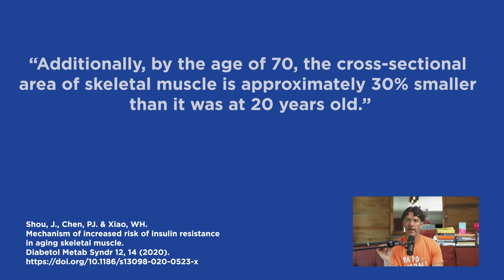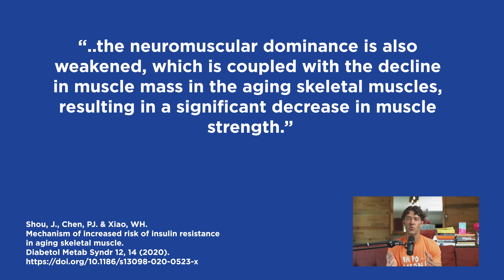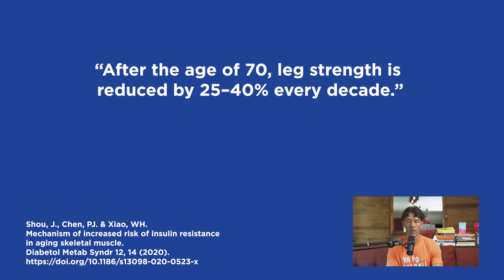When you lose the type two fibers, you lose strength. Strength actually declines at a much faster degree compared to the quantity of the muscle. The strength loss is about 25 to 40% per decade after the age of 40, compared to the roughly 10% loss of muscle size per decade after the age of 40. This is why it's so important to train for strength and to focus on high-intensity interval training as opposed to always doing long, slow, steady-state cardio.